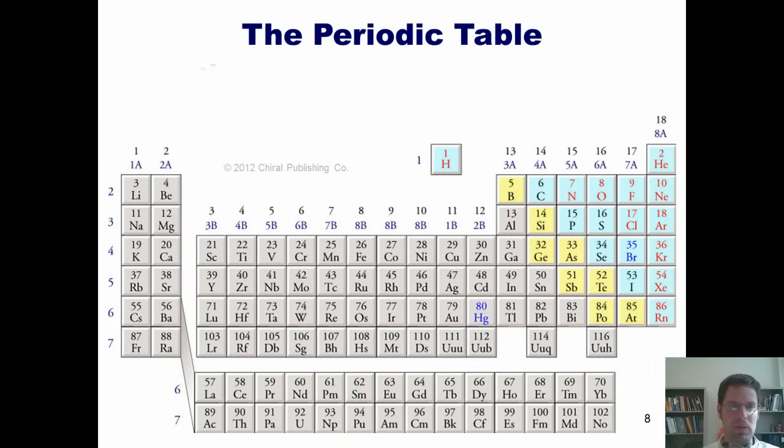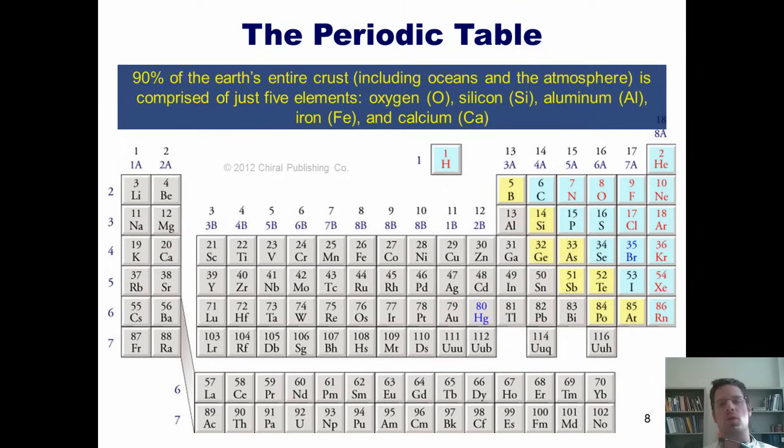Did you know that 90% of the Earth's crust, including oceans and the atmosphere, is comprised of just five elements? These five are oxygen, silicon, aluminum, iron, and calcium.